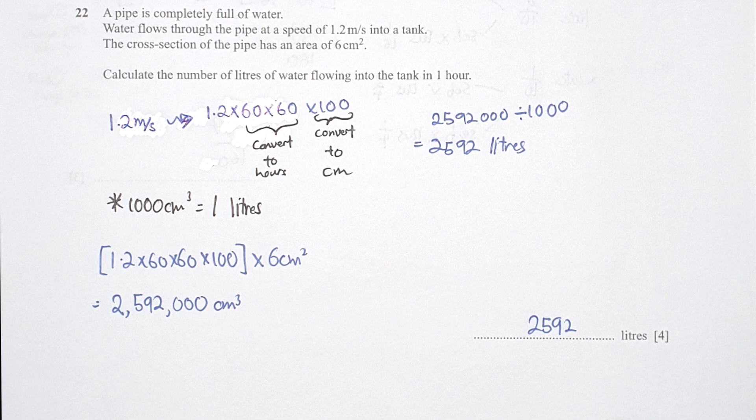So multiply it by 6. Then you will get 2,592,000. And to divide it by 1,000, then you will be able to convert your results into 2,592 liters.